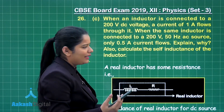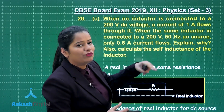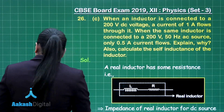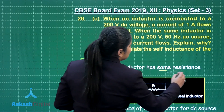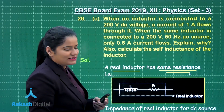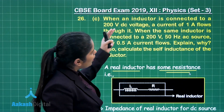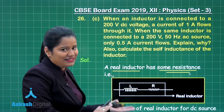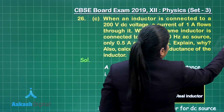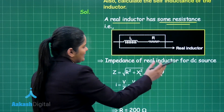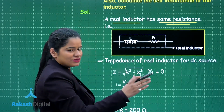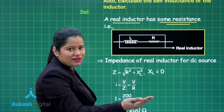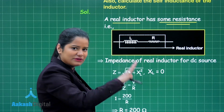The reason why only 0.5 ampere flows through the inductor when connected to the AC source is that a real inductor has some resistance. Because of that resistance, the current drops from 1 ampere to 0.5 ampere when we change the source from DC to AC. A real inductor has resistance, and this is why we experience a change in current when changing the source from DC to AC.